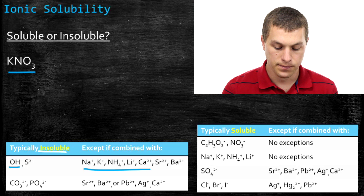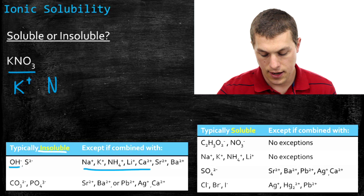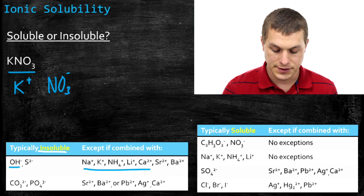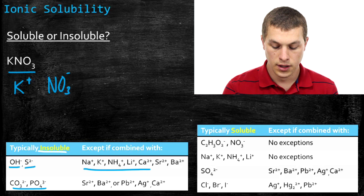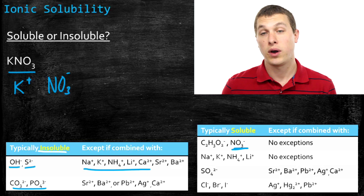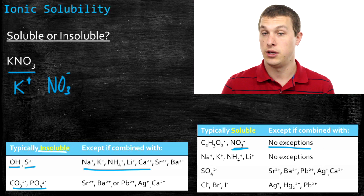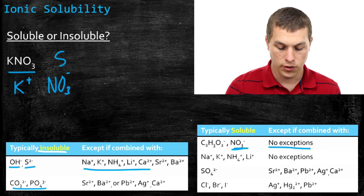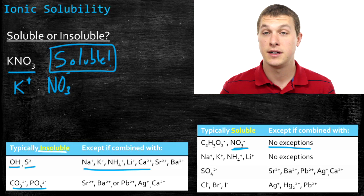So we have potassium nitrate. I can look for either of the ions in potassium nitrate — potassium and nitrate (NO₃⁻). It's useful to be able to recognize your polyatomic ions. I look through the insoluble categories and don't see potassium or nitrate anywhere. Going to the soluble table, I see in the first row nitrate — nitrate compounds are typically soluble, with no exceptions. That means anything paired with nitrate is always soluble. So potassium nitrate is soluble. If I drop this in a beaker, it's going to dissolve.